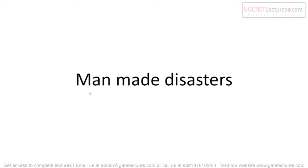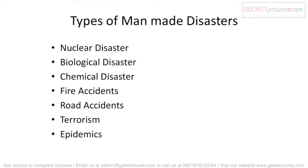Now we move from natural disasters to manmade disasters. As the name suggests, manmade disasters are those behind which human beings are directly or indirectly responsible. Different types include nuclear disaster, biological disaster, chemical disaster, fire accidents, traffic accidents, terrorism, and epidemics.